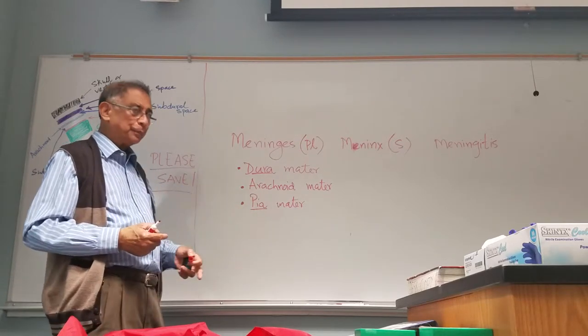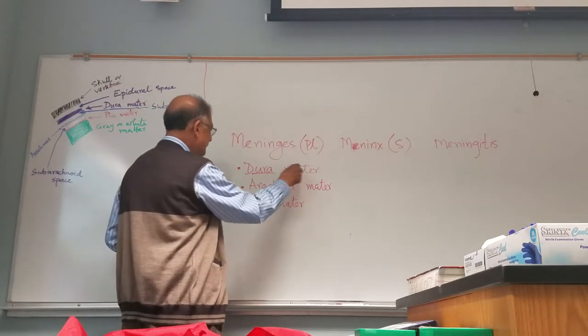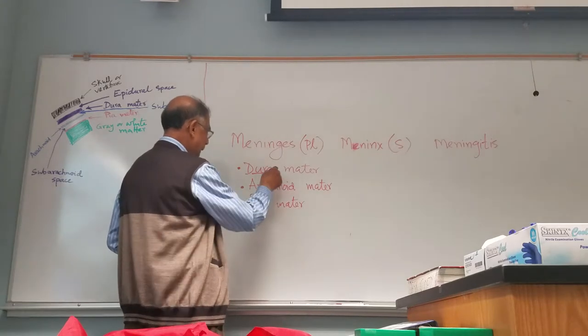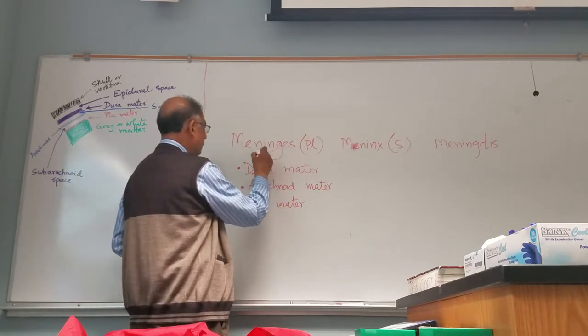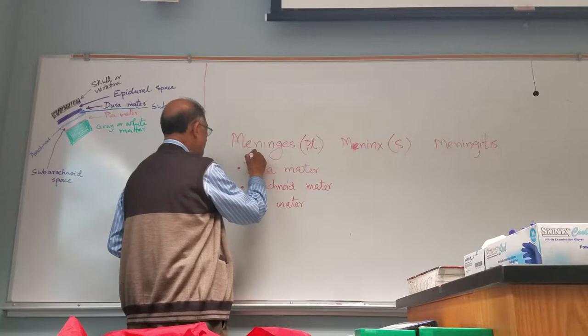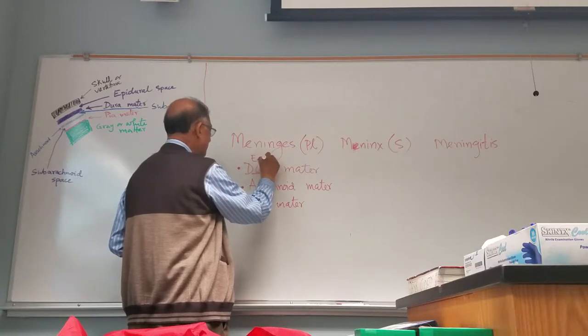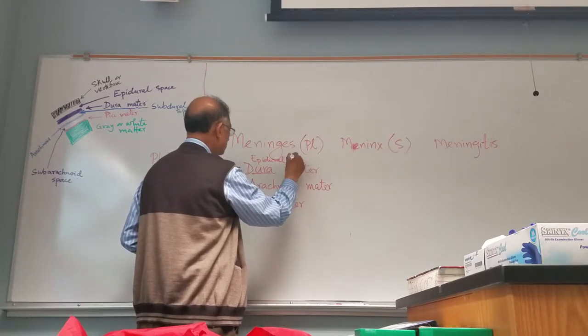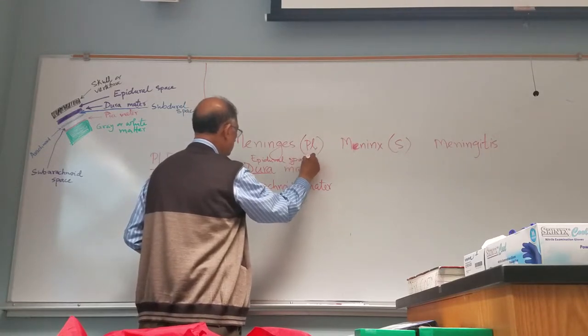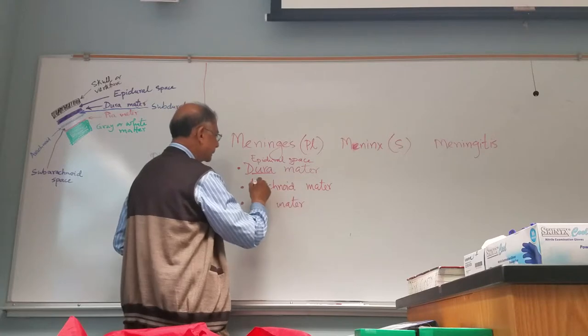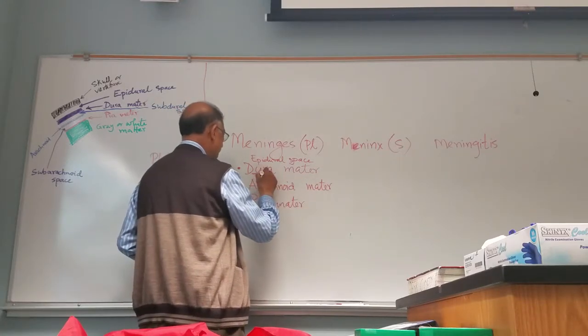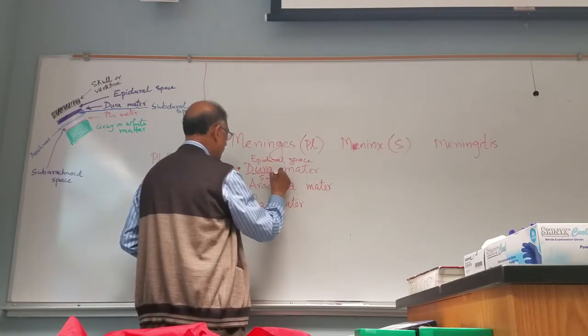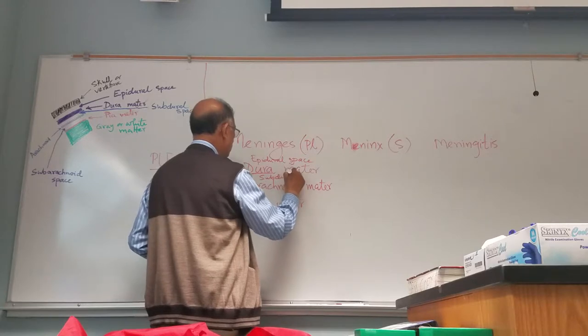But there are spaces. Above dura mater, the space is called epidural space. Between dura mater and arachnoid mater is the subdural space.